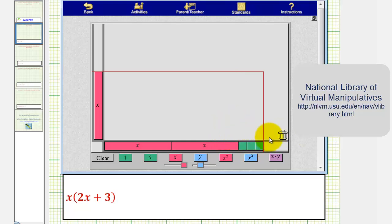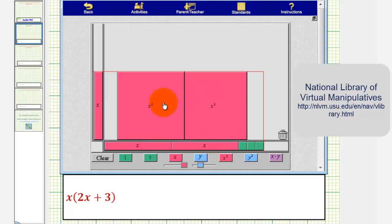And once again, the area of the rectangle formed will give us our product. Looking at this region here, notice how we can fit a square here with dimensions x by x, which would have an area of x squared. So we'll use an x squared tile here. Notice how we can fit another x squared tile here.